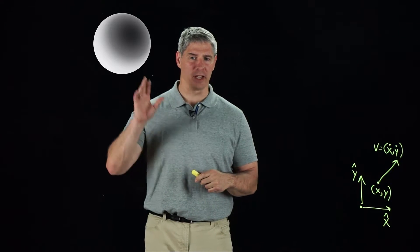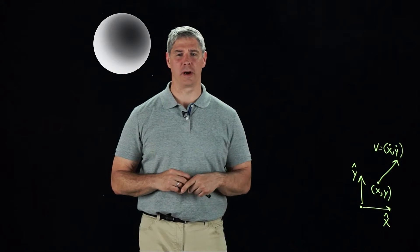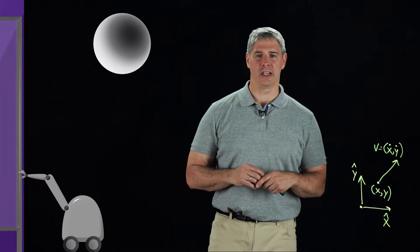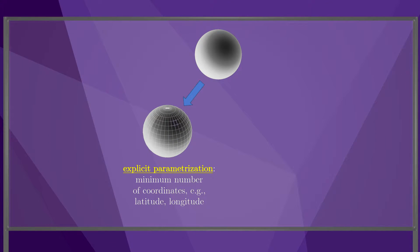If the space is curved, however, like a sphere, we have two ways we could represent it. We could either use an explicit parametrization, which uses a minimum number of coordinates to represent the space, such as latitude and longitude for a sphere.